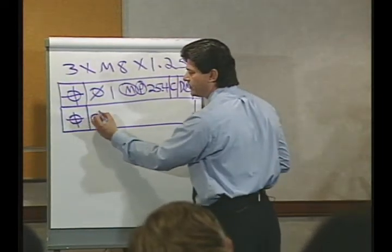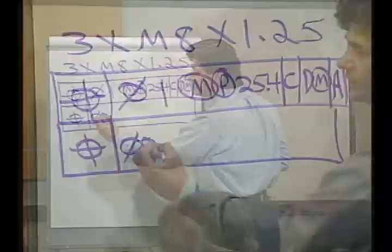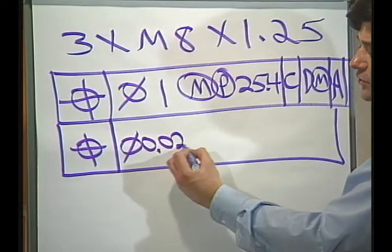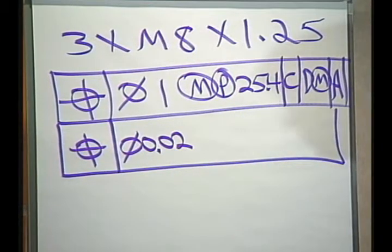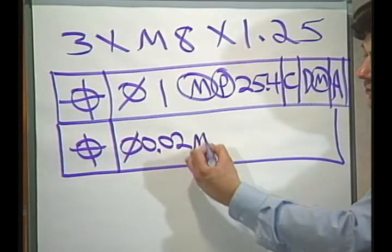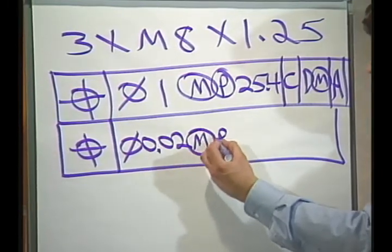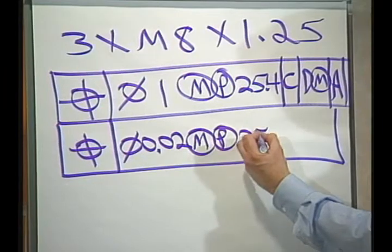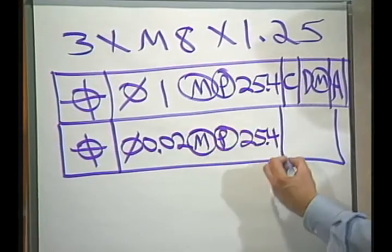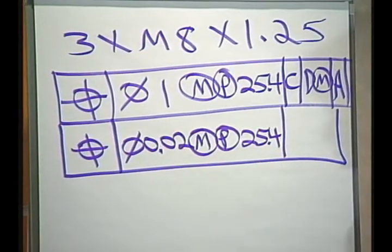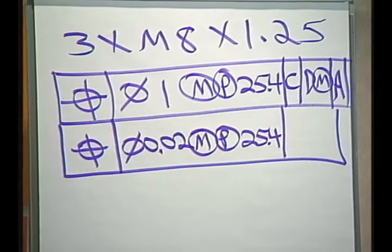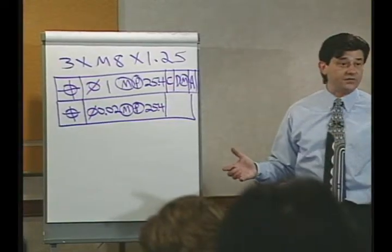I need a cylindrical tolerance zone. I need a tolerance that was calculated using the fixed fastener formula, 0.03 or 0.02 maybe. I need a maximum material condition symbol here. I need a projected tolerance zone. I need the 25.4. The question really is, do I need all of the datums?